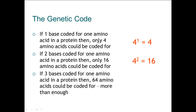But if you use three bases, then you can code for up to 64 amino acids. Therefore, DNA is a triplet code. Those 64 codes that you could possibly use — for example AAA would be one, and AAG would be a second — give you 64 permutations. You can code for up to 64 amino acids, and because there are only 20, this is enough.